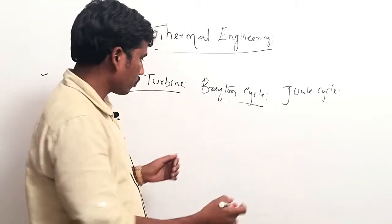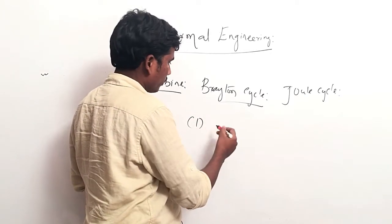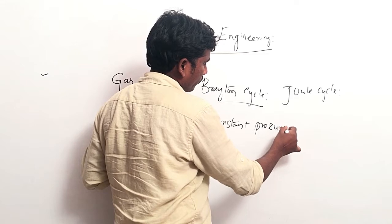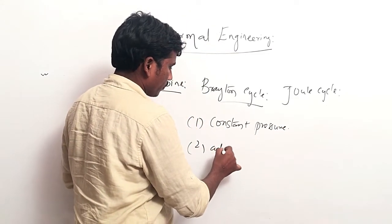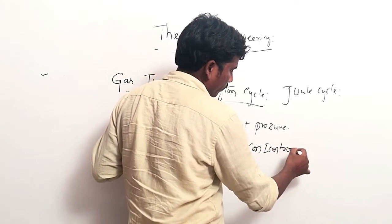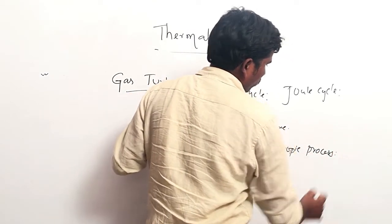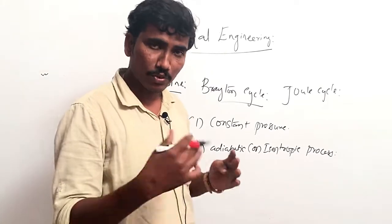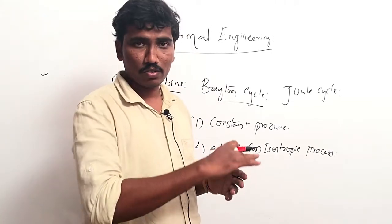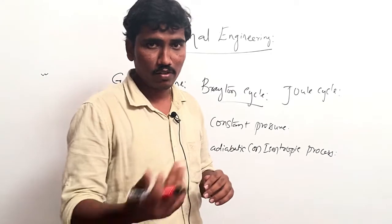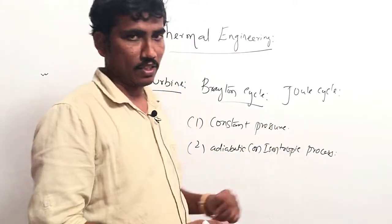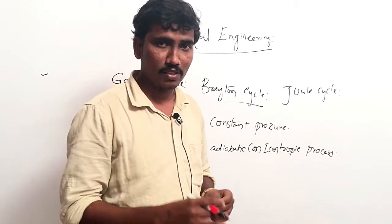In the Brayton cycle we have four processes. Number one is constant pressure process, and two adiabatic or isentropic processes. I will give you a clear explanation of all four processes in the Joule cycle. After that I will draw how the process will go on in the gas turbine. First we need to know which processes take place in the Joule or Brayton cycle, so I will draw the PV and TS diagram for the Brayton cycle.